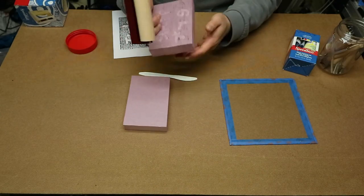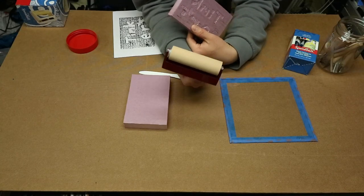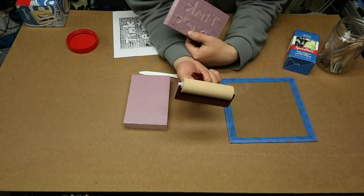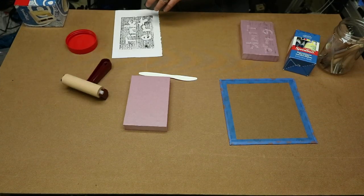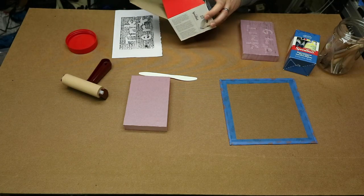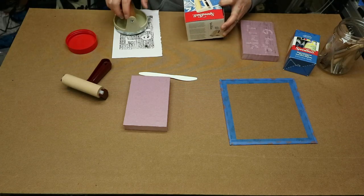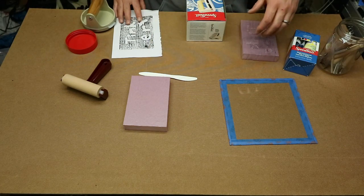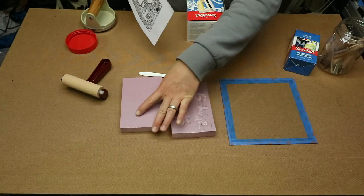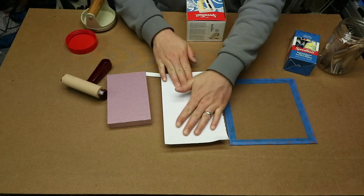And the critical piece, this is probably the only specialized piece of equipment that you would need in order to run this activity. And then after the plate is inked, you would use a baron or something else to rub the paper on top of the printing block.